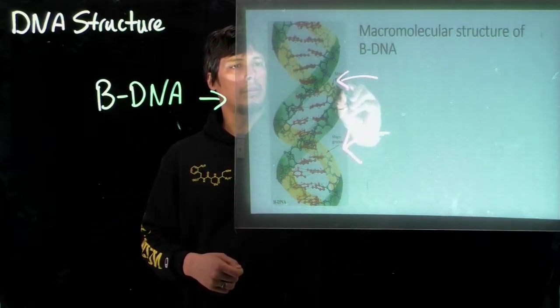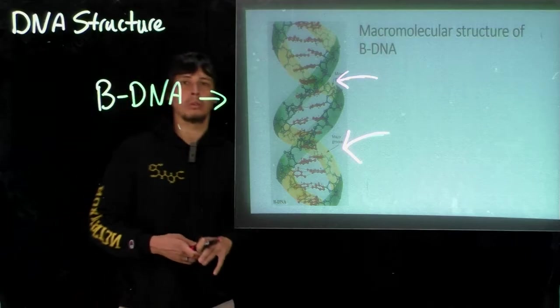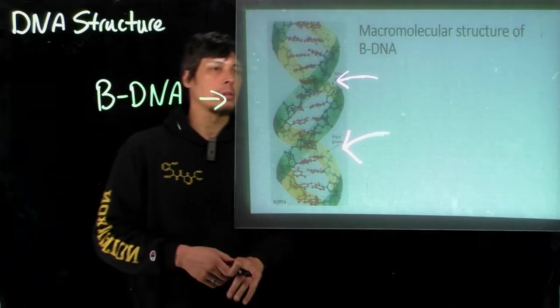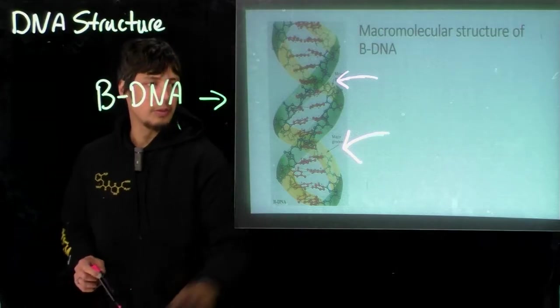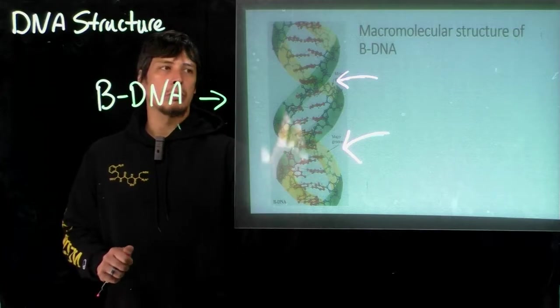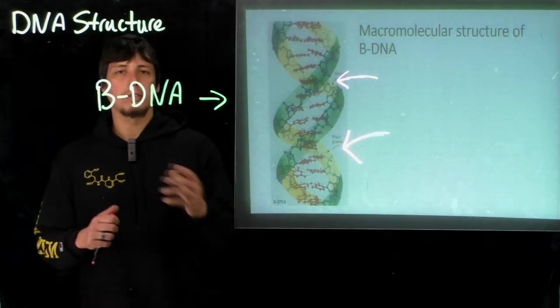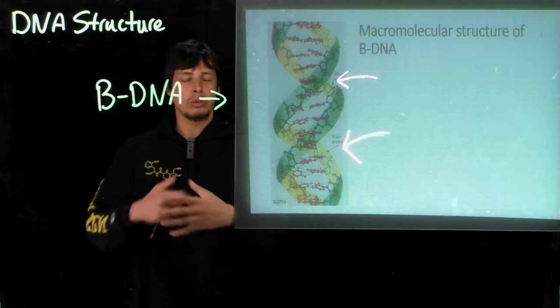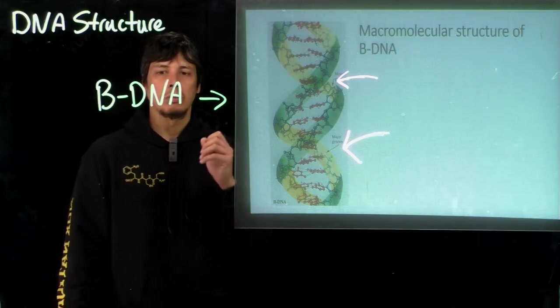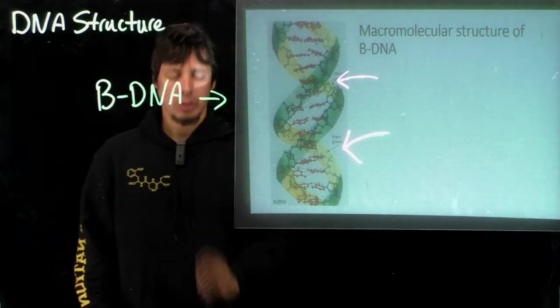And then the minor groove. Now these are important binding sites for different proteins including DNA polymerase or RNA polymerase that are important for replication or transcription respectively. So the bases orient themselves in a very particular way within the major groove and the minor groove, which allows for different hydrogen bond donors and acceptors to be available for these enzymes to attach to the DNA. So this helps in recognition of places to start either replication or transcription.